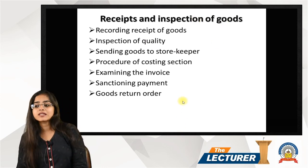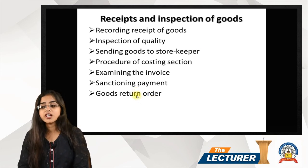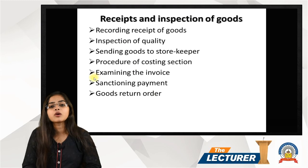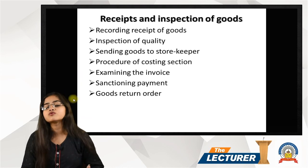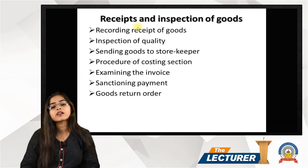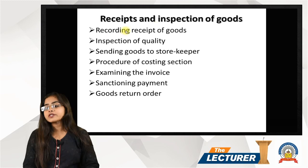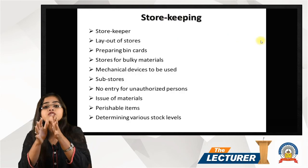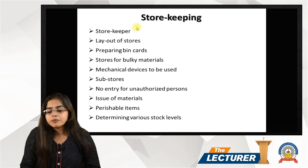The company has receipt and inspection of goods. Inspection and verification of goods is important because ultimately there is one level of auditing. The receipt inspection of goods focuses on the purchase of goods and services. We will now be discussing about store keeping.